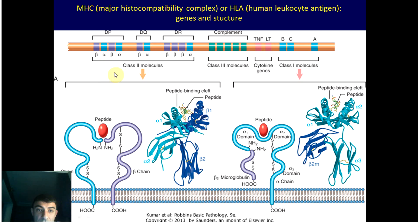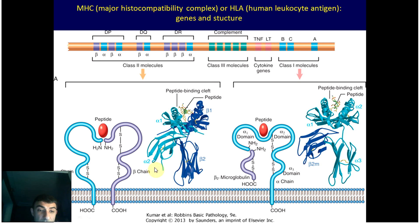Class II molecules are encoded by DP, DQ, and DR genes, which — like class I molecules — are extremely variable and polymorphic between different people. In this case we have a similar structure of the complex, but no β2 microglobulin. Instead, we have more or less symmetric α and β chains, between which we again have that groove. These class II molecules are expressed only by antigen-presenting cells, and correspondingly, CD4 cells are able to recognize antigens shown to them by antigen-presenting cells.